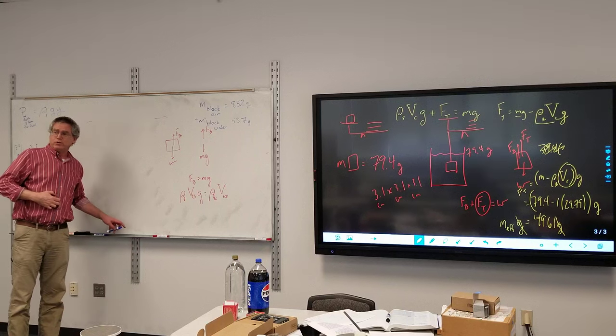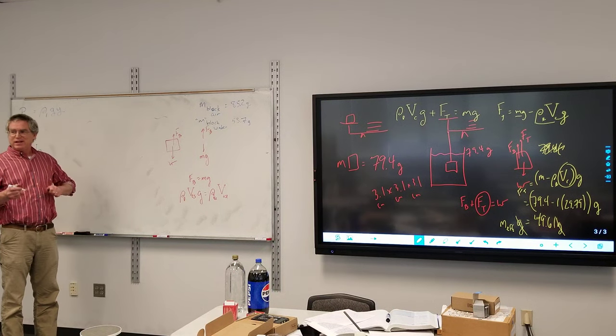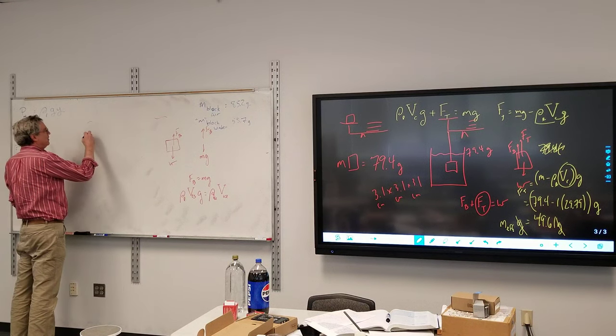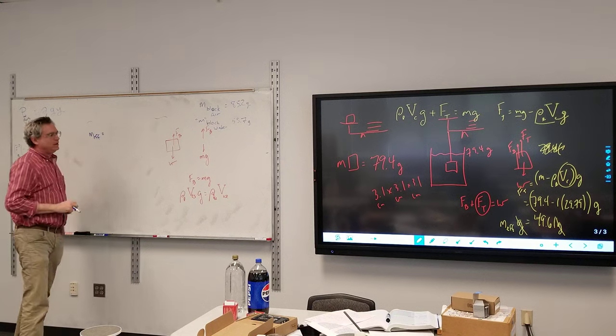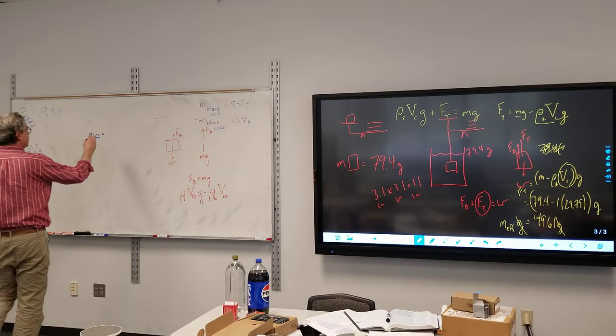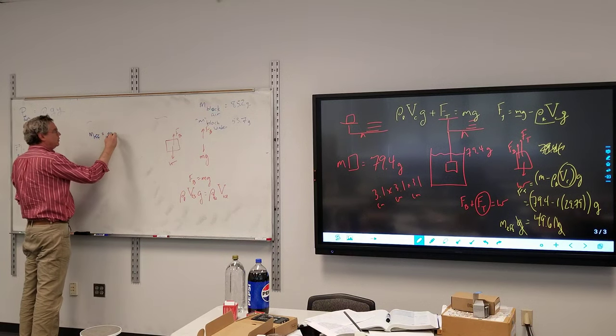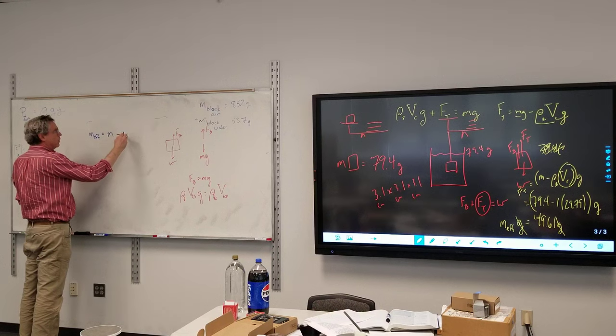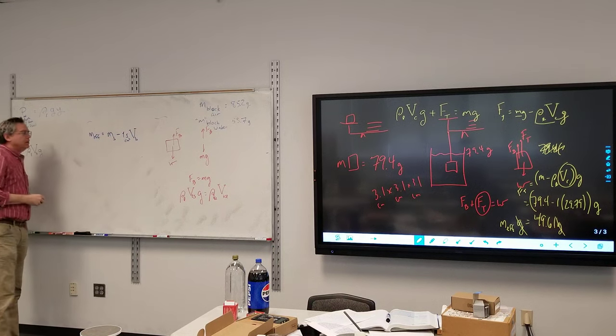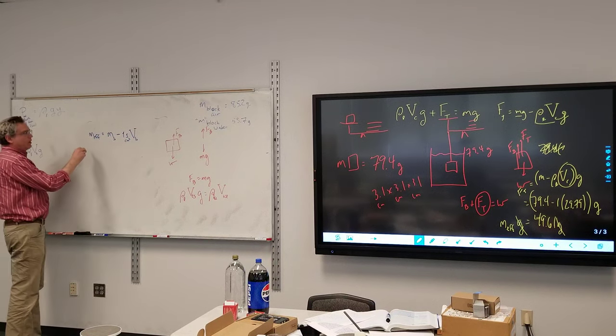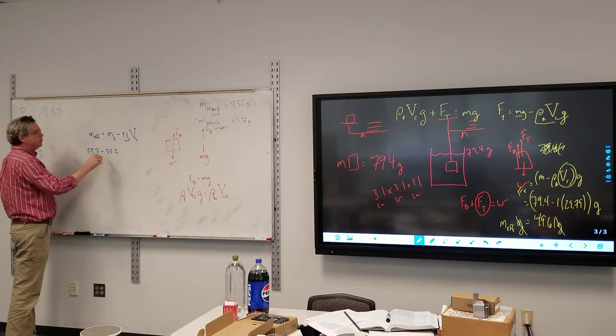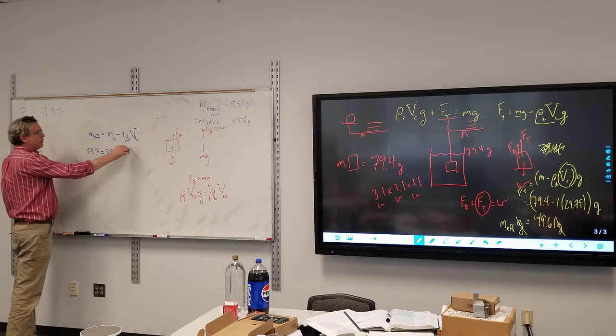And you're cranking on the calculator there. Did you figure it out already? Kind of messing around with the numbers. I know that the effective mass is going to be equal to the actual mass minus 1 gram per cubic centimeter times the volume of the block. And so I have 53.7 is equal to 85.2 minus the volume of the block.